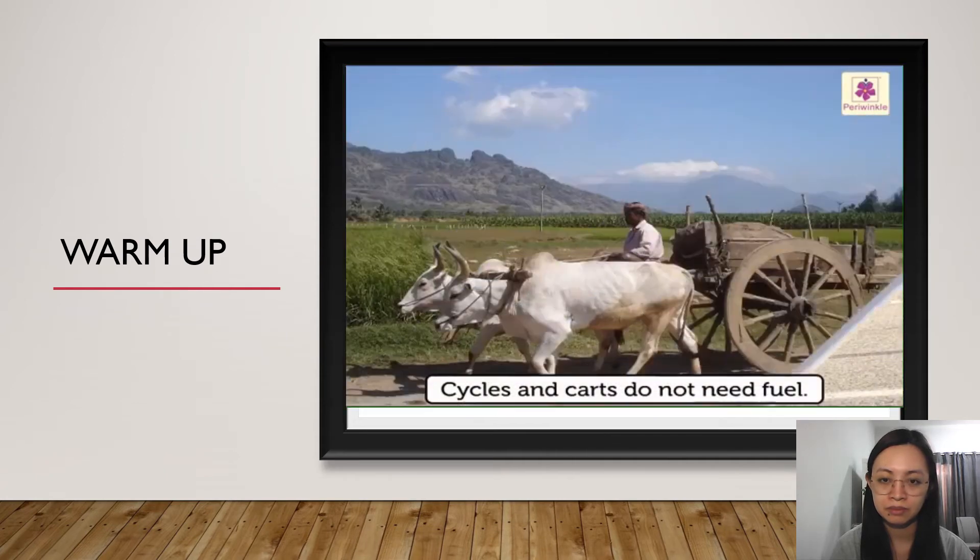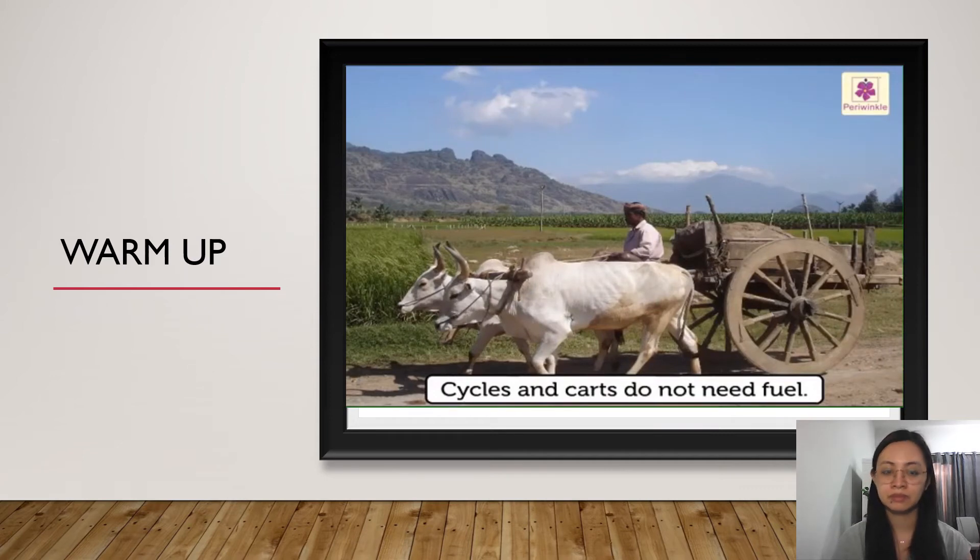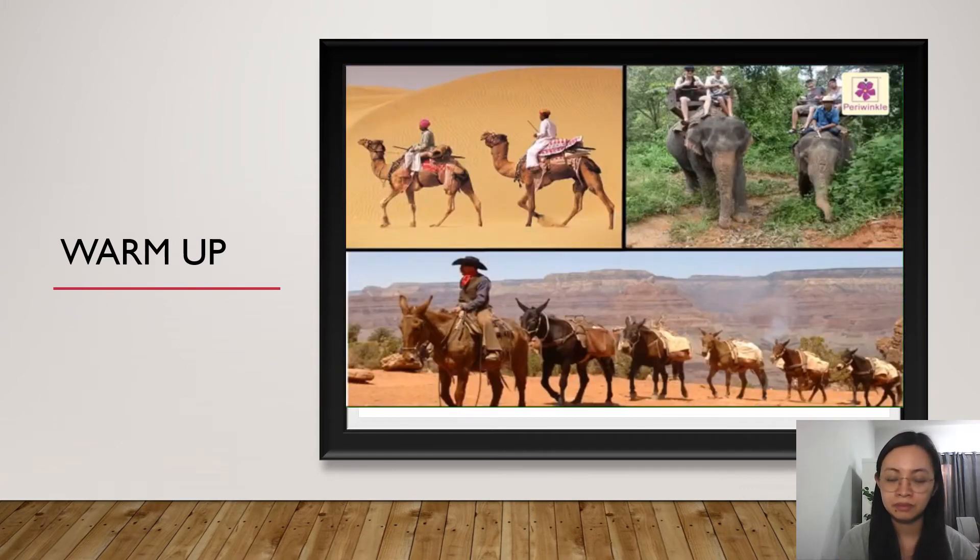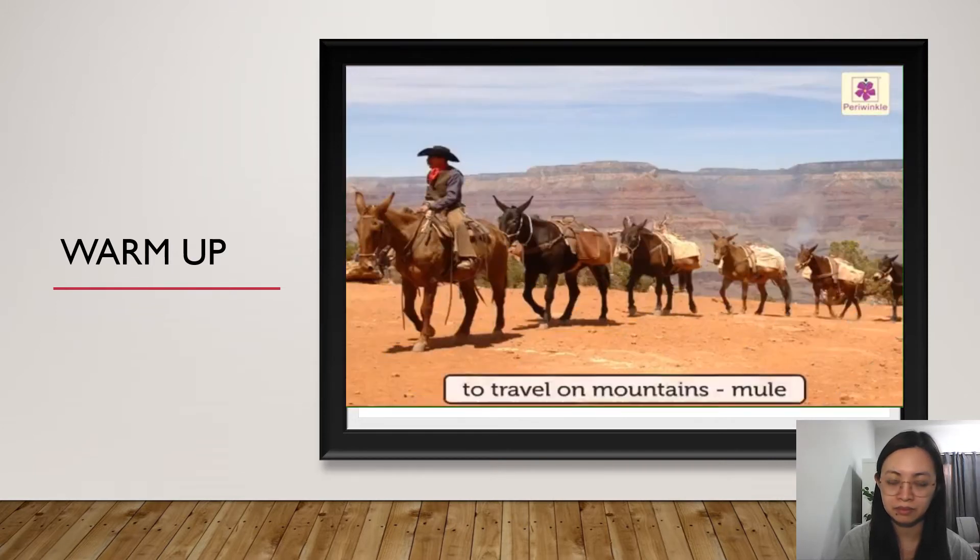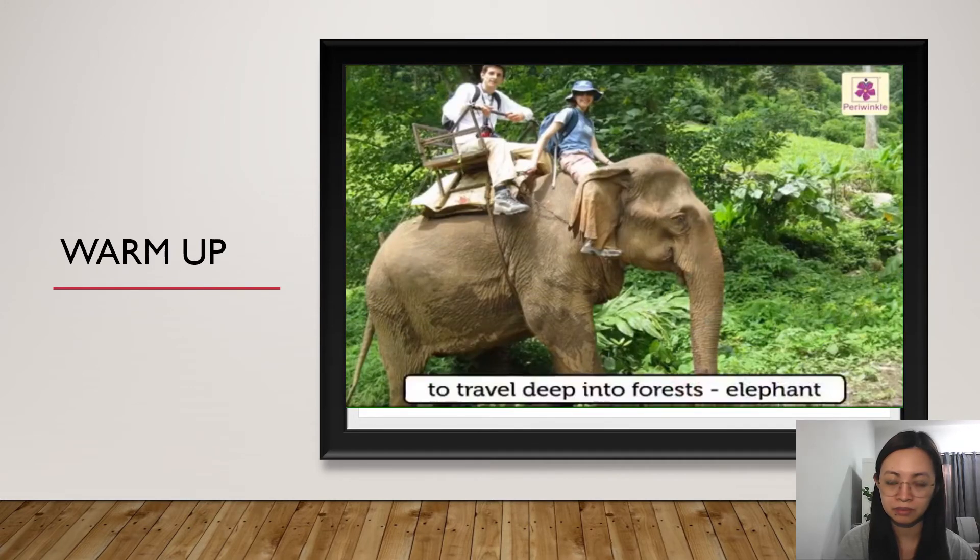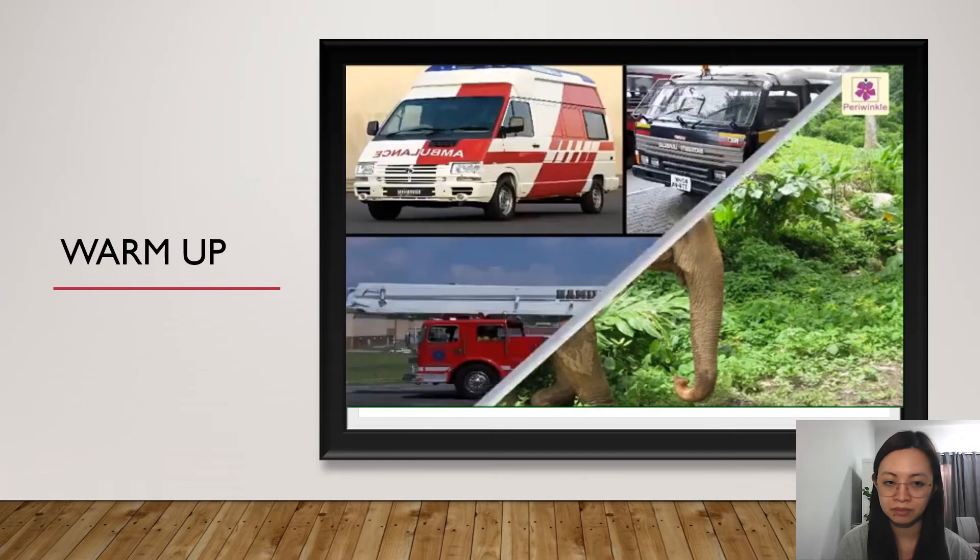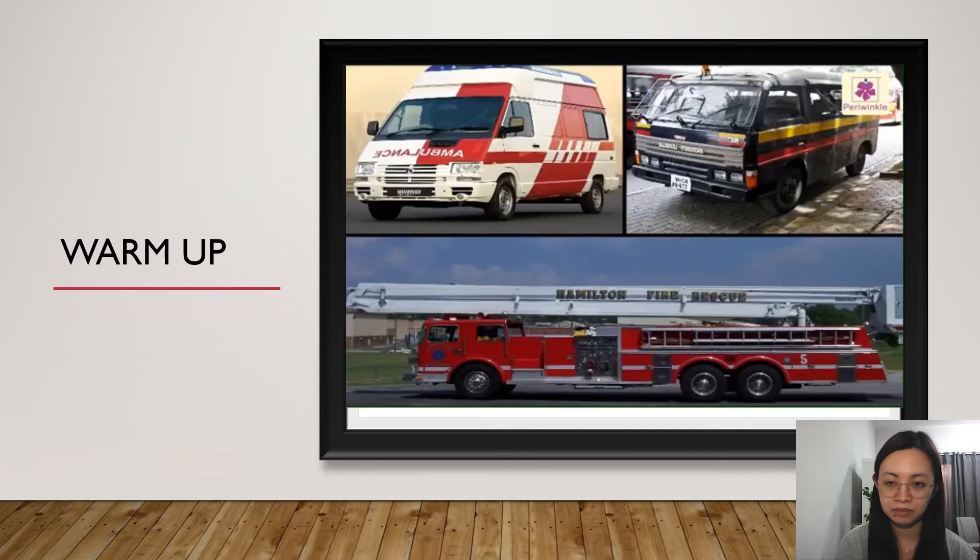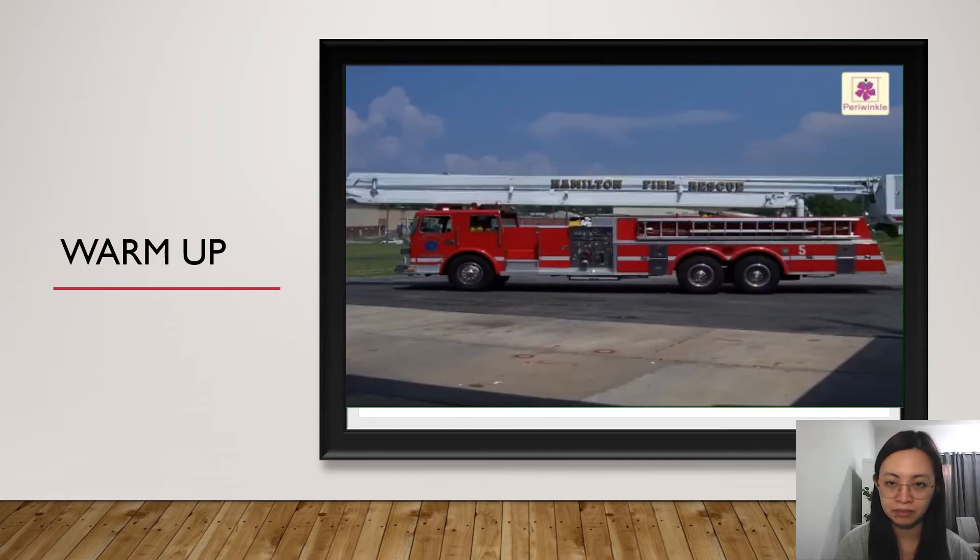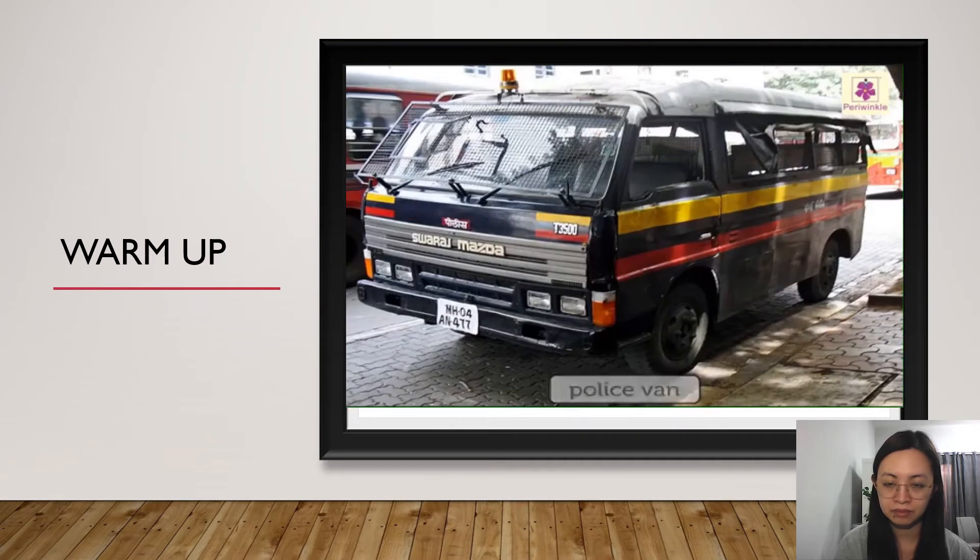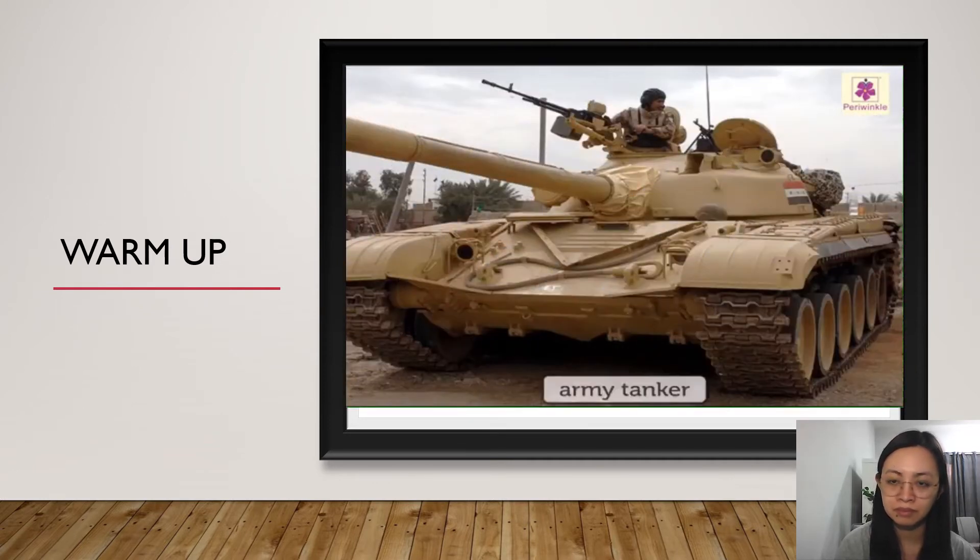Cycles and carts do not need fuel. Sometimes we also travel on animals. To travel across a desert, we ride on a camel. To travel on mountains, we ride on a mule. To travel deep into forests, we ride on an elephant. We also see a few special vehicles like an ambulance, fire engine and police van on the road.